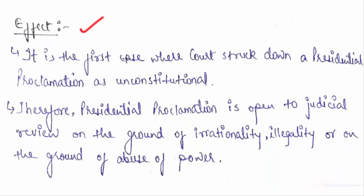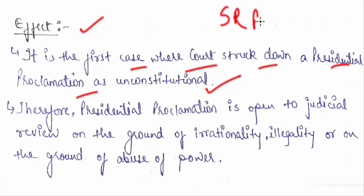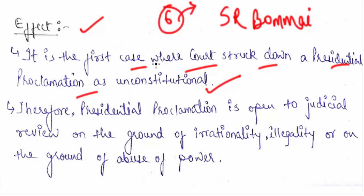The effect is that this is the first case where the court struck down a presidential proclamation as unconstitutional. After this, we will also see the S.R. Bommai case. The President's Rule was attempted to be imposed in 6 places, and there were different cases, but they were finally clubbed together in the S.R. Bommai case. We will discuss what the court finally said about President's Rule in that case.